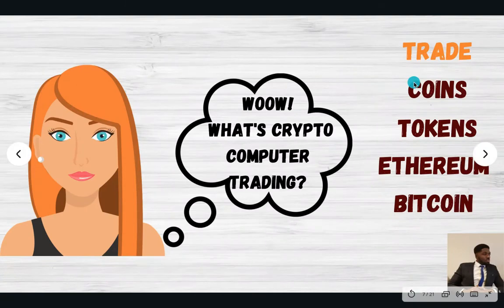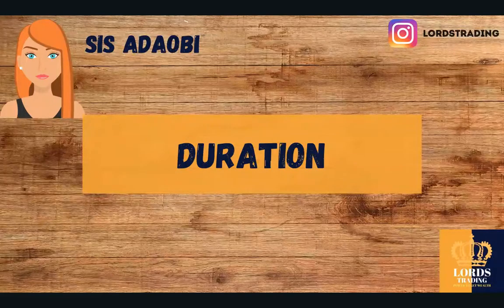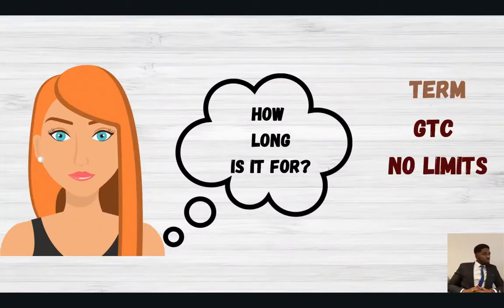You can trade cryptocurrencies — coins, tokens, Ethereum, or Bitcoin — and there are platforms where you can do that. So what's the duration of cryptocurrency trading? It's as long as you want. If you buy a coin, you can have it as long as you want. There are no limits.